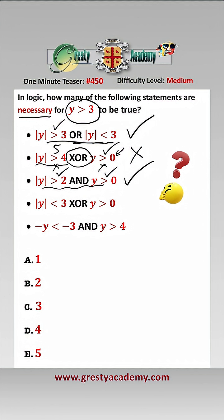For the fourth statement, if y is greater than 3, then the modulus of y less than 3 will always be false, and y greater than 0 will always be true, and XOR needs 1 to be true, and therefore XOR would be true, so this statement is necessary.